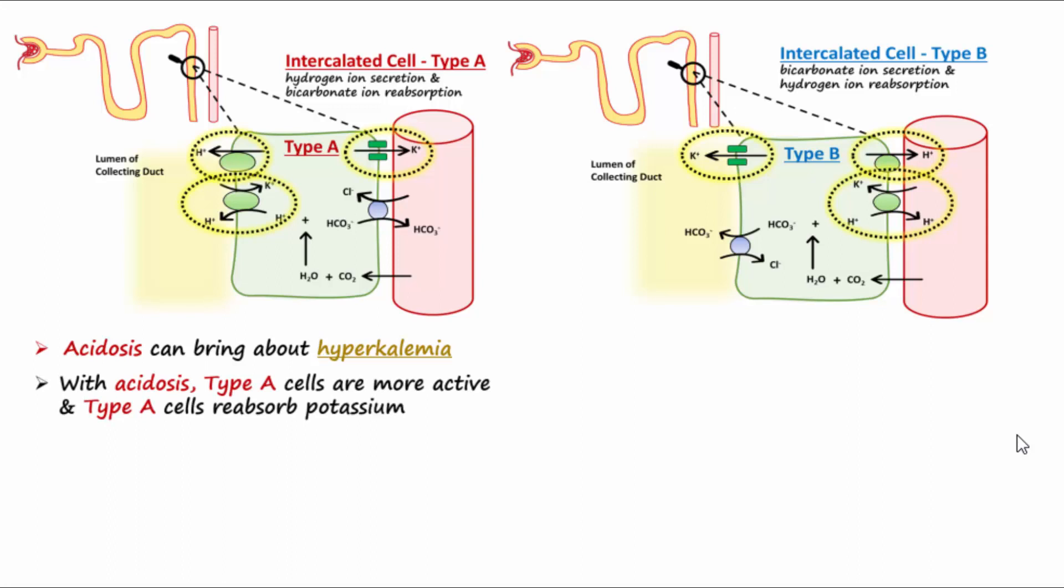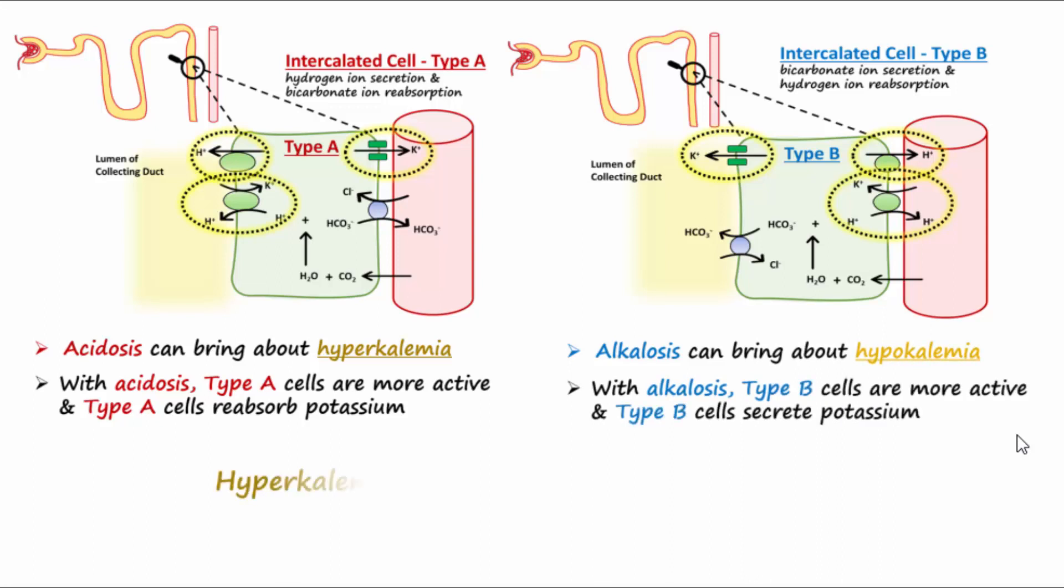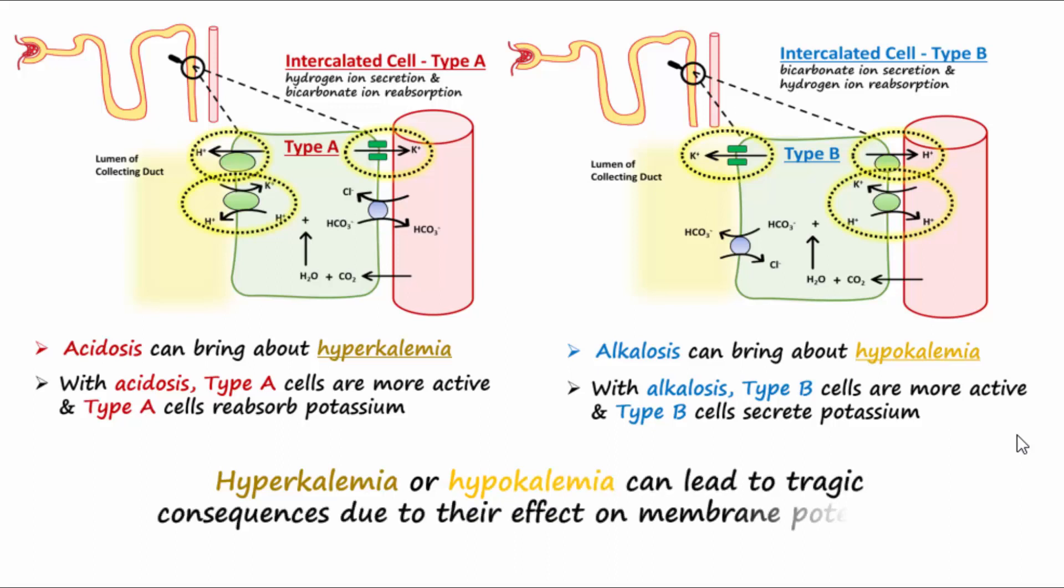Alkalosis on the other hand can bring about hypokalemia, which is too little potassium in the blood, because the type B cells will be active and they cause secretion of potassium. Both hyper and hypokalemia can lead to tragic consequences due to their effect on membrane potentials.